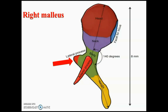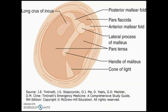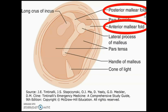When you view the right middle ear from the otoscope, you can see the posterior and anterior malleal folds, the lateral process is visible, and the handle of malleus is visible, which is posteriorly and medially oriented.